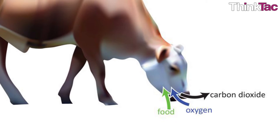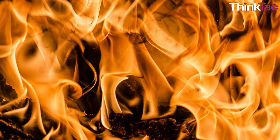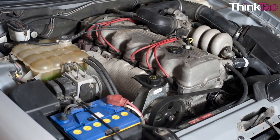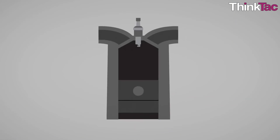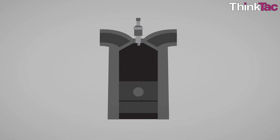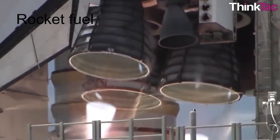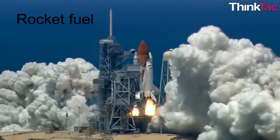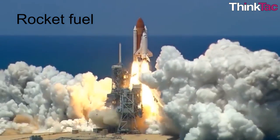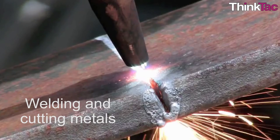Animals need oxygen for a variety of bodily functions like respiration and digestion, because oxygen is required for the activation of many enzyme systems. It is because of our understanding of combustion and the role of oxygen that engines have been invented — these engines work by combustion of fuel, and without them, transportation and many industrial processes would not be possible. Oxygen is also used in rocket fuel to facilitate combustion and result in rapid propulsion, as well as in welding and cutting metals.